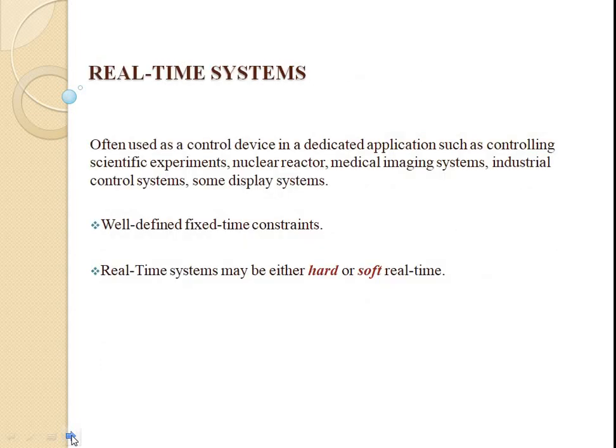The next one is the real-time operating system. The primary objective of a real-time operating system is to provide quick response time and thus meet scheduled deadlines. User convenience and resource utilization are secondary concerns. Real-time operating systems have many events that must be accepted and processed in a short time or within a certain deadline. Such applications include rocket launching, flight control, robotics, real-time simulation, and telephone switching equipment.